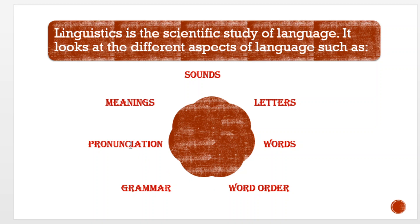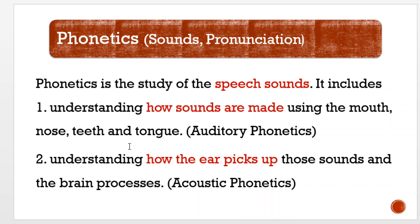Pronunciation is another important aspect. So we have mentioned sounds, letters, words, word order, grammar, pronunciation, meaning, etc. Now we will look at more technical terms for the same ideas. The first aspect of linguistics is the study of phonetics.